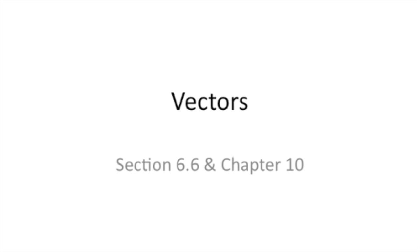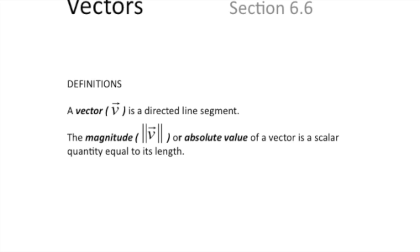We started vectors with section 6.6 because that's where some of the basic definitions were. We identified vectors as a directed line segment, and the magnitude of a vector is a scalar quantity equal to its length. Our book uses absolute value as being synonymous with magnitude and uses the symbol with one set of lines. I have always found that confusing, so I will be using the two sets of lines to indicate magnitude to differentiate it from absolute value.